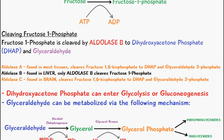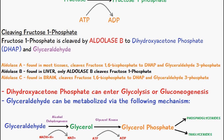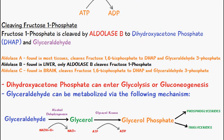There are three types of aldolases found in the human body: aldolase A, B, and C. Aldolase A is found in most tissues and it cleaves fructose-1,6-bisphosphate to dihydroxyacetone phosphate and glyceraldehyde-3-phosphate.